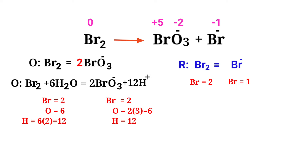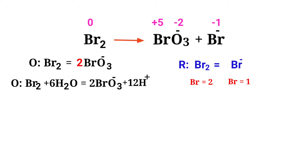Now the number of atoms are balanced in the oxidation half reaction. Next, balance the atoms in the reduction half reaction. To balance the Bromine atoms, we need to put a coefficient of 2 in front of Br⁻. Now the number of atoms are balanced in the reduction half reaction.